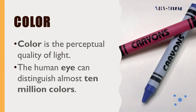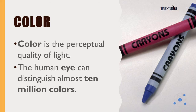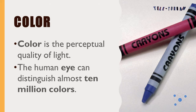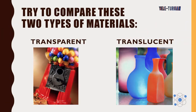Color. What is color? Color is the perceptual quality of light. The human eye can distinguish almost 10 million colors. Try to compare these two types of materials: transparent and translucent.